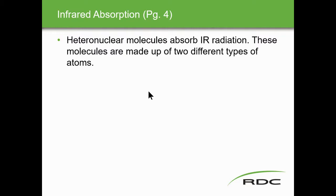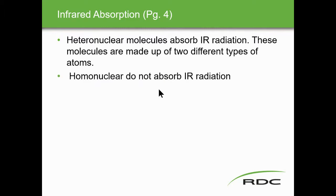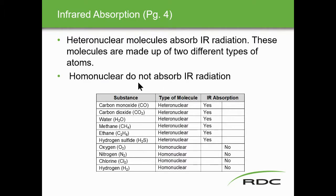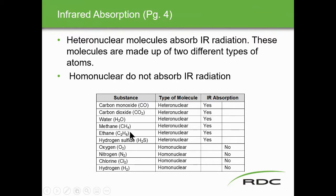Heteronuclear molecules absorb IR radiation — this is what we're looking for. CO, carbon monoxide, and CO2, carbon dioxide, are made up of two different types of atoms and absorb IR. Molecules that absorb IR include CO, CO2, H2O, methane (CH4), ethane (C2H6), and similar compounds. Molecules that do not absorb IR include homonuclear diatomics such as oxygen, nitrogen, chlorine, and hydrogen.